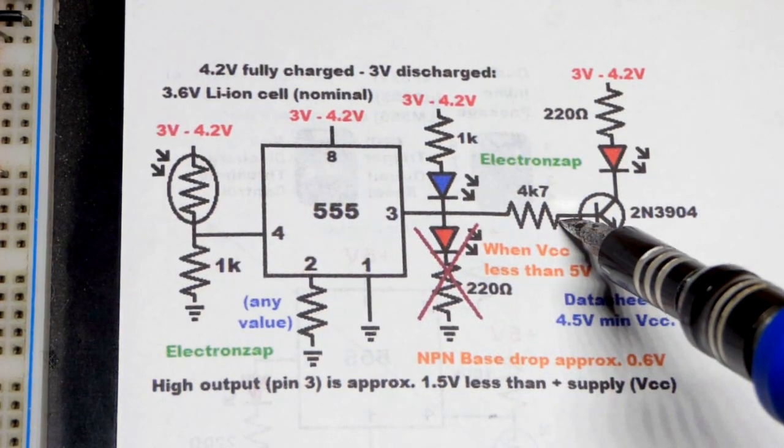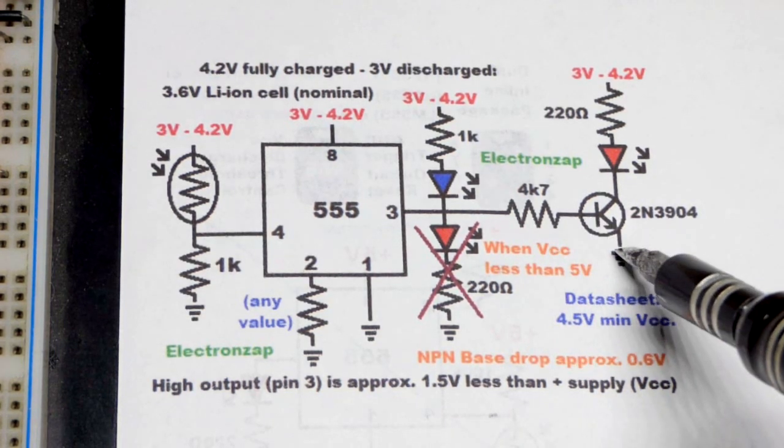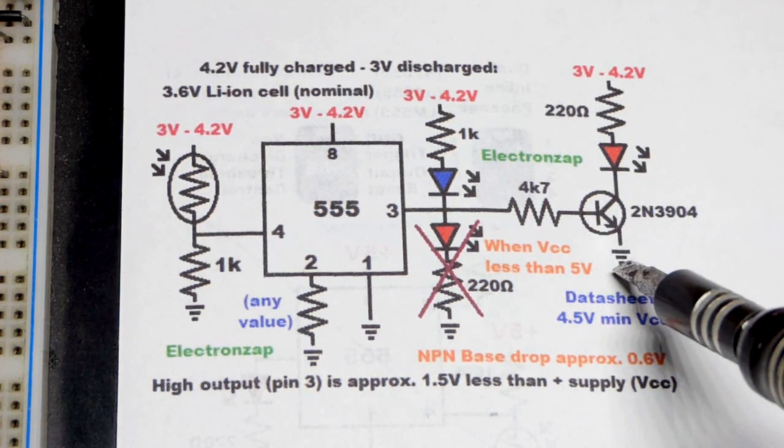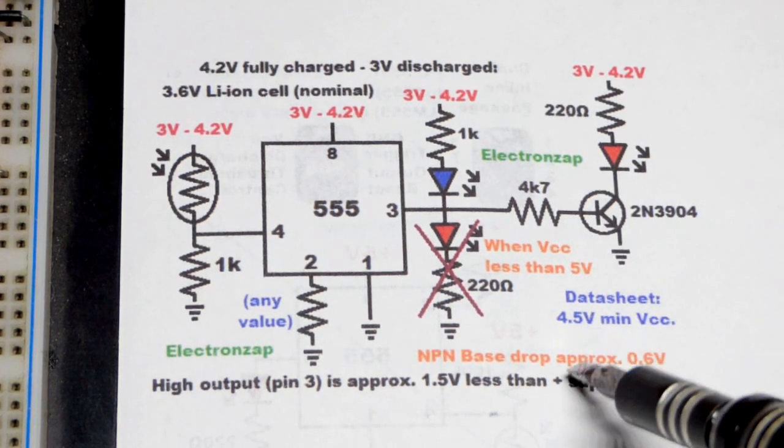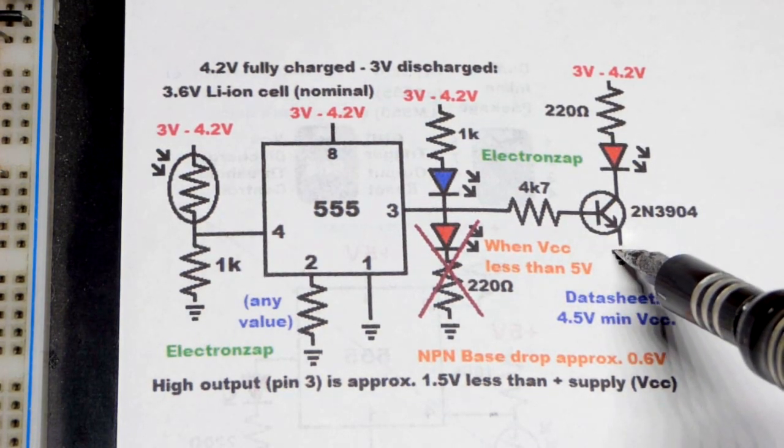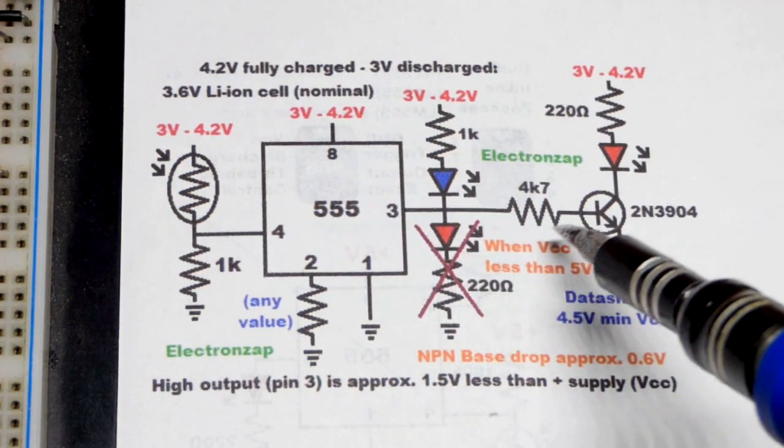We can take a resistor going to an NPN bipolar junction transistor. This is wired as a switch - you can see we've got base to emitter, there's a direct path to ground, and it takes about 0.6 volts to turn on the NPN transistor. This will still have about an extra volt.